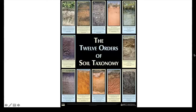Mollisols are prairie or grassland soils that have dark coloration and are extremely fertile. They have a lot of calcium and magnesium and make up about 7% of the world's glacier-free land surface. Alfisols are pretty similar to Ultisols, but they're less intensely weathered and less acidic. They're more fertile. A lot of forest vegetation has Alfisols for their soil taxonomy. They make up about 10% of the world's glacier-free land surface.